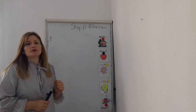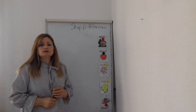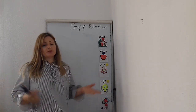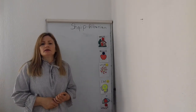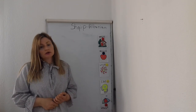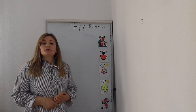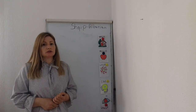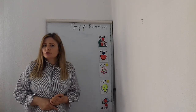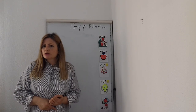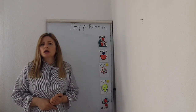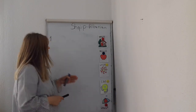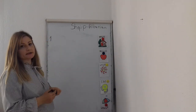Today we will talk about the feminine noun in Albanian. What you need to remember first is that feminine nouns end in a vowel, but we have a few feminine nouns which end in a consonant. The definite form of the feminine nouns ends in A or JA. So let's see — these are the rules.